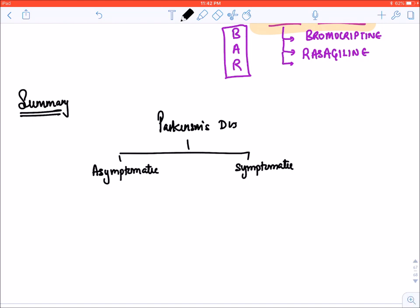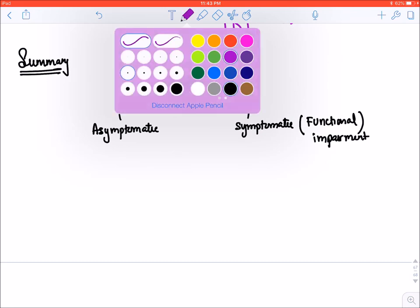Symptomatic means there are symptoms of rigidity, bradykinesia, etc. Because of this reason the patient is having functional impairment, the person is not able to do work. If the patient is asymptomatic, remember the drug of choice is rasagiline.